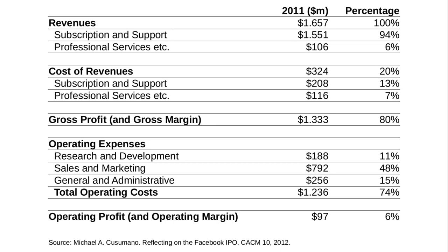Here is an income statement of Facebook — a SaaS company that sells user data and attention to advertisers. In 2011, Facebook had revenues of 1.6 billion US dollars, almost exclusively from subscription and support (i.e., advertising), with a small portion — maybe seven or eight percent — from professional services.